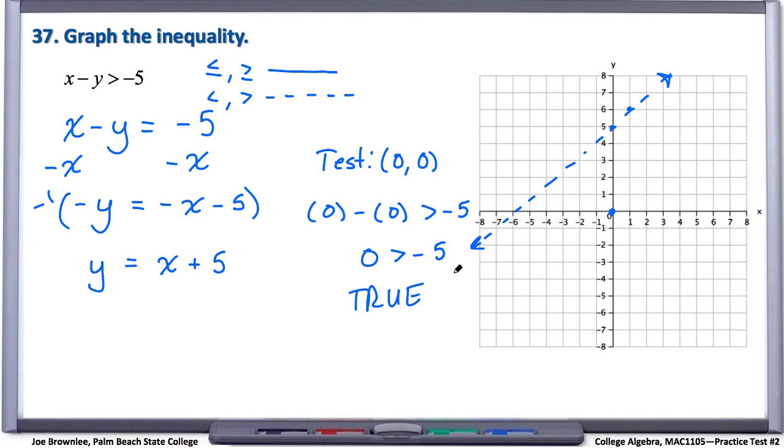And so because the side of the line that we chose to test resulted in a true statement, that means we're going to shade on this side of the line. Remember, you only shade on the side of the line where, when you take a point from that side, plug it into the inequality, you get a true statement.